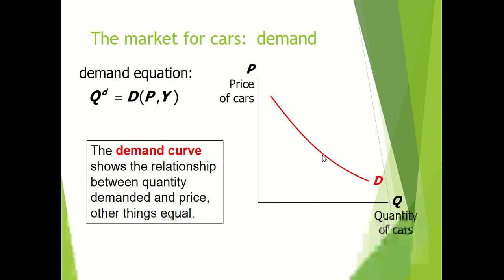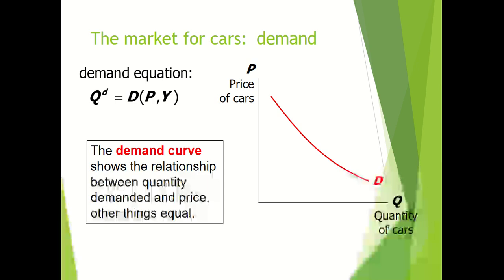The demand curve shows the relationship between quantity demanded and price. Other things being equal — such as price of related goods, income, population, etc. — these are factors which we assume remain constant when demand and price are correlated.